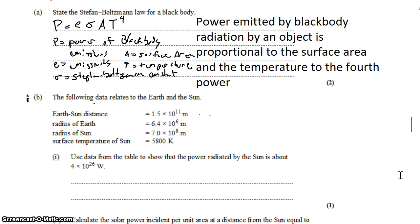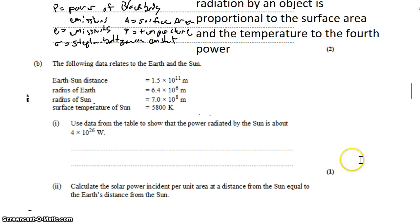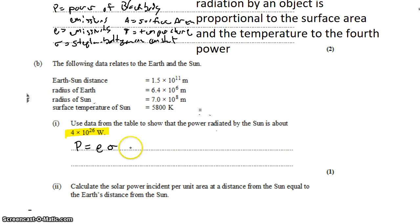Now we want to do something with the Stefan-Boltzmann law. We have the following data about the sun and the earth: the distance between them, the radius of the earth, the radius of the sun, and the temperature of the sun at its surface. We're asked to show that the power radiated by the sun is about a given value. We know that power equals emissivity times the Stefan-Boltzmann constant times surface area times temperature to the fourth. We're not given the emissivity of the sun, so we assume the sun is a perfect blackbody radiator and that emissivity equals 1.